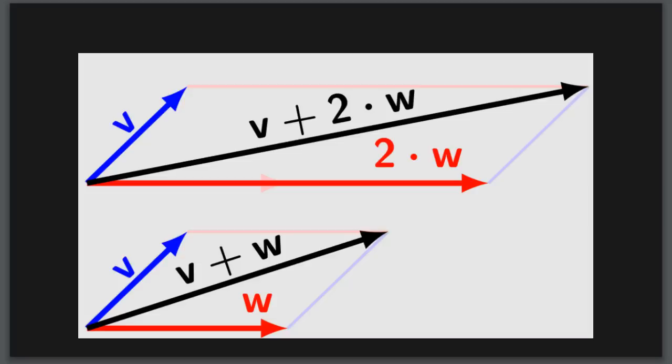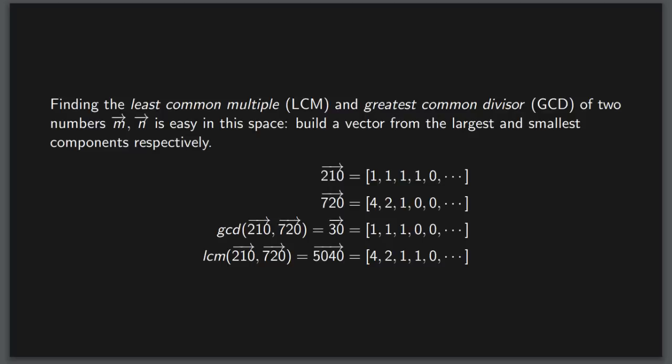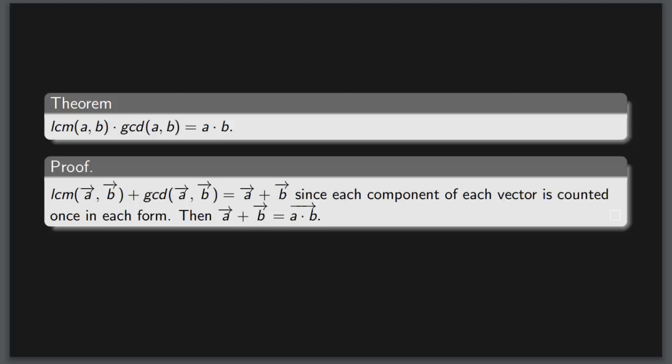This structure is quite useful in a number of ways. For example, we can find the least common multiple and greatest common divisor of two numbers by considering their vector form and creating a new vector with the large and small components respectively, as we see in this example. This also produces a trivial proof of the fact that a least common multiple multiplied by the greatest common divisor produces the product of the original two numbers. This comes out of the fact that these two operations shuffle the information in a reversible manner.